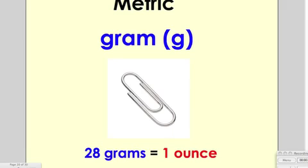The first unit is a gram. A paper clip has the mass of a gram. 28 grams equal 1 ounce.